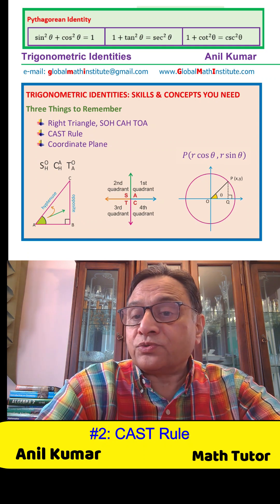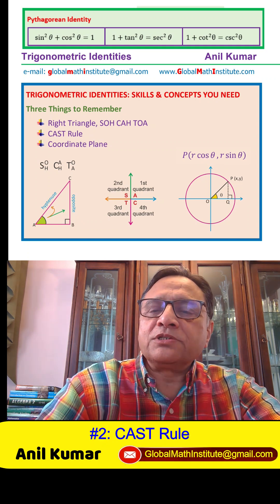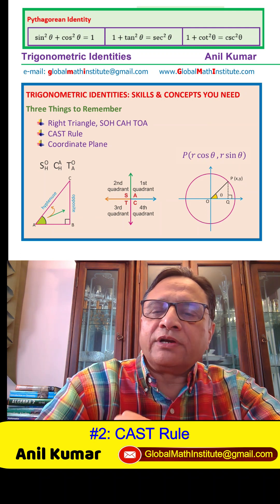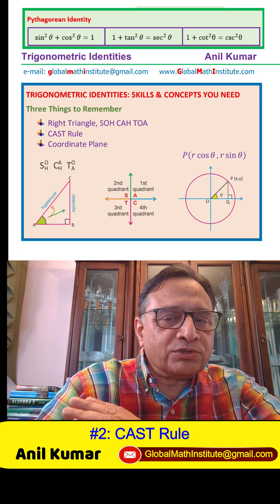Then we have the CAST rule. All are positive in quadrant 1, sine in quadrant 2, tan in quadrant 3, cosine in quadrant 4.